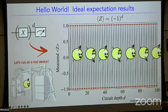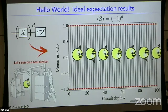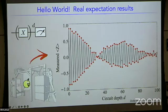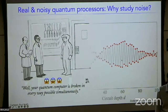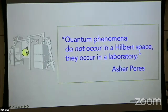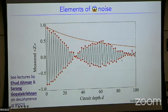The ideal picture of this algorithm on a quantum computer should give the expectation value of Z as a function of the input d: alternating +1 and −1, telling you whether the integer is even or odd. But when I sent this job up to the cloud and got the data back from a real quantum machine, it doesn't quite look like the ideal alternating sequence — instead it looks wrong. This reminds me of the joke that your quantum computer is broken in every way simultaneously.